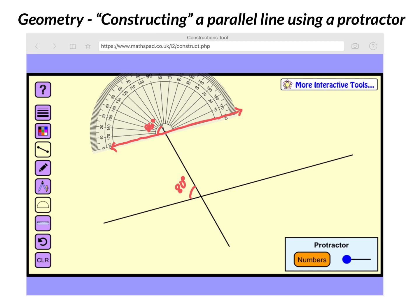these are corresponding angles, because they're in the upper left corner of these intersections. If these corresponding angles are equal, and of course this one would be 100, this one would be 100, then I've created parallel lines.